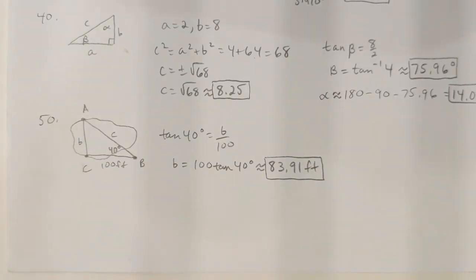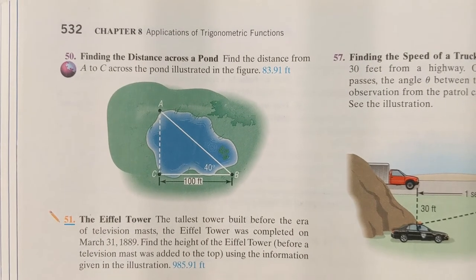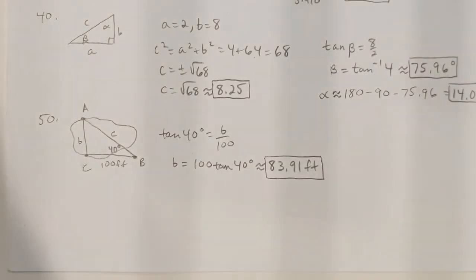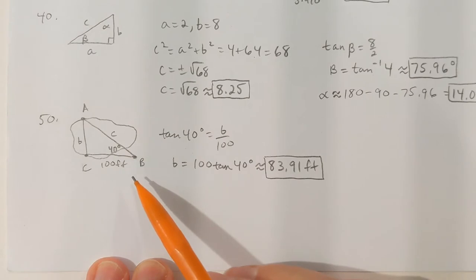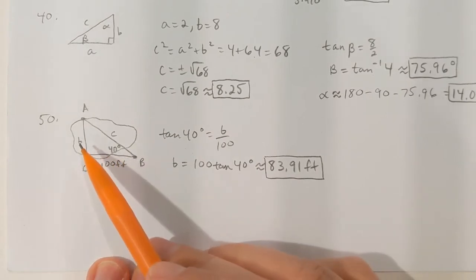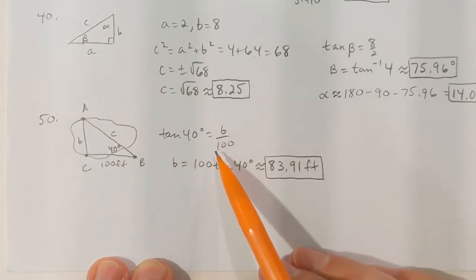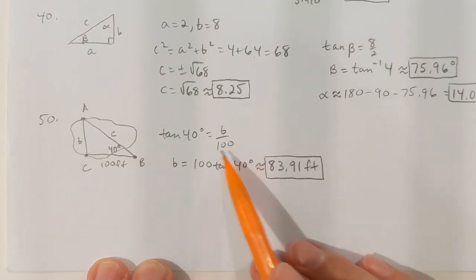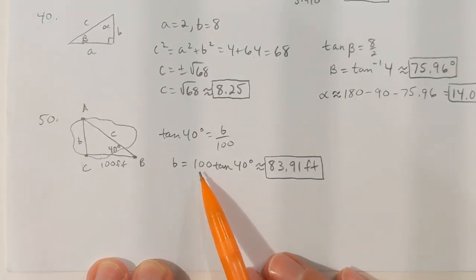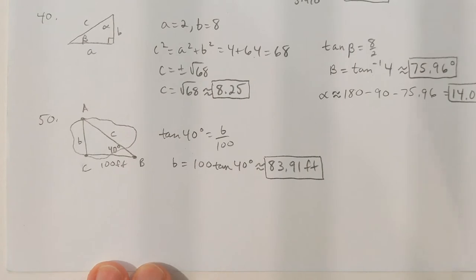Problem 50: find the distance from A to C across a pond, as illustrated in the figure. We want to find side b. There is a 40-degree angle, b is opposite the 40 degrees, and the adjacent side is 100 feet. Opposite over adjacent means using the tangent function: tan(40°) = b/100. Multiplying both sides by 100, b = 100 × tan(40°) ≈ 83.91 feet.